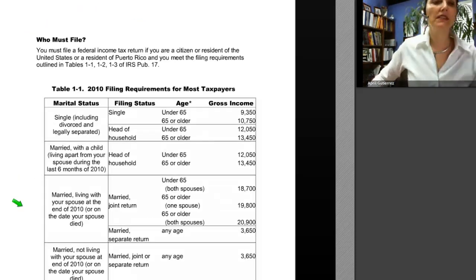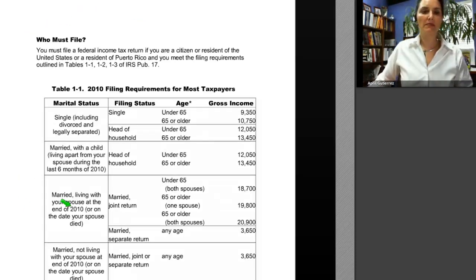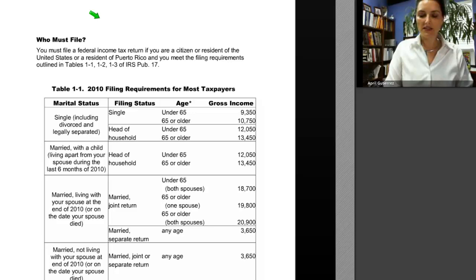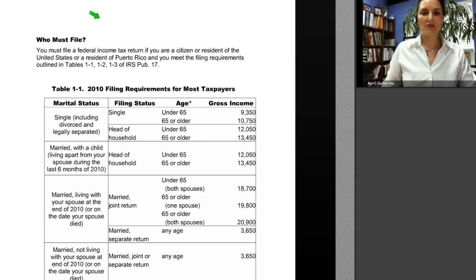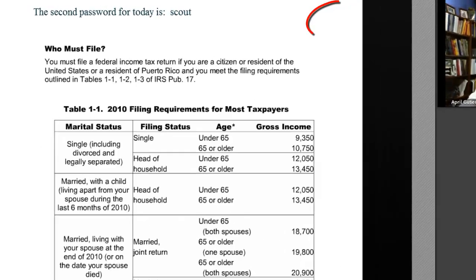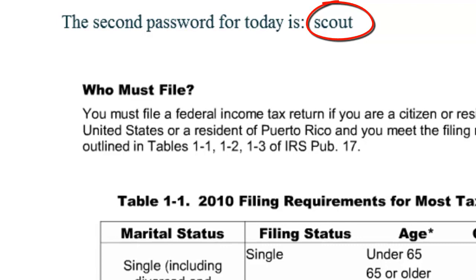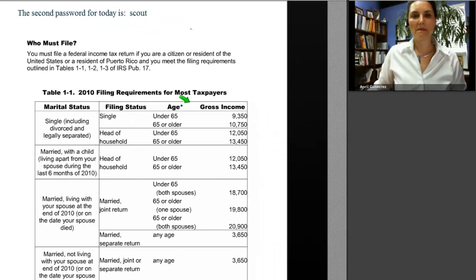This is a good point to give you the second password of the day — grab your pen and write it down. The second password of the day is also not associated with the test, and that password is 'Scout.' If you're a Lone Ranger fan, you would know that Silver was the name of the Lone Ranger's horse and Scout was the name of Tonto's horse.